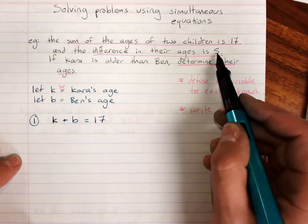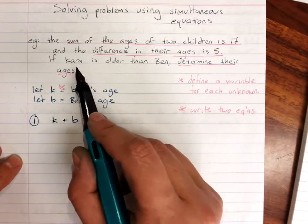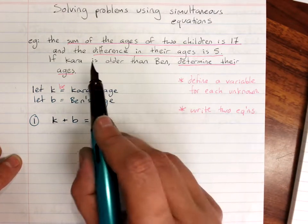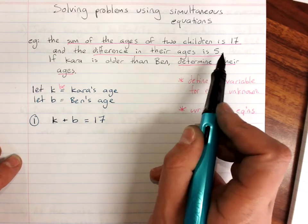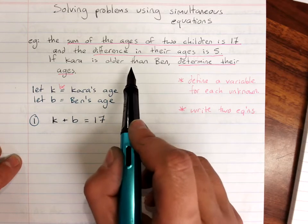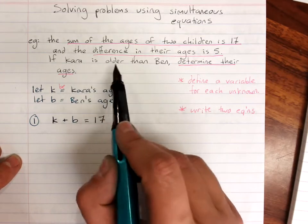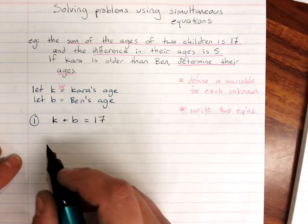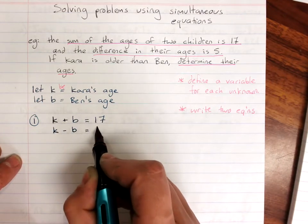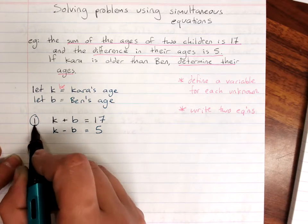The difference in their ages is 5. Now they told you Kara is older than Ben because it matters when you do difference if I've got a negative difference or if I put the older person first or the younger person first. Because I've got a positive difference, the older person must be first. So Kara's age minus Ben's age is 5. And that's equation 2.